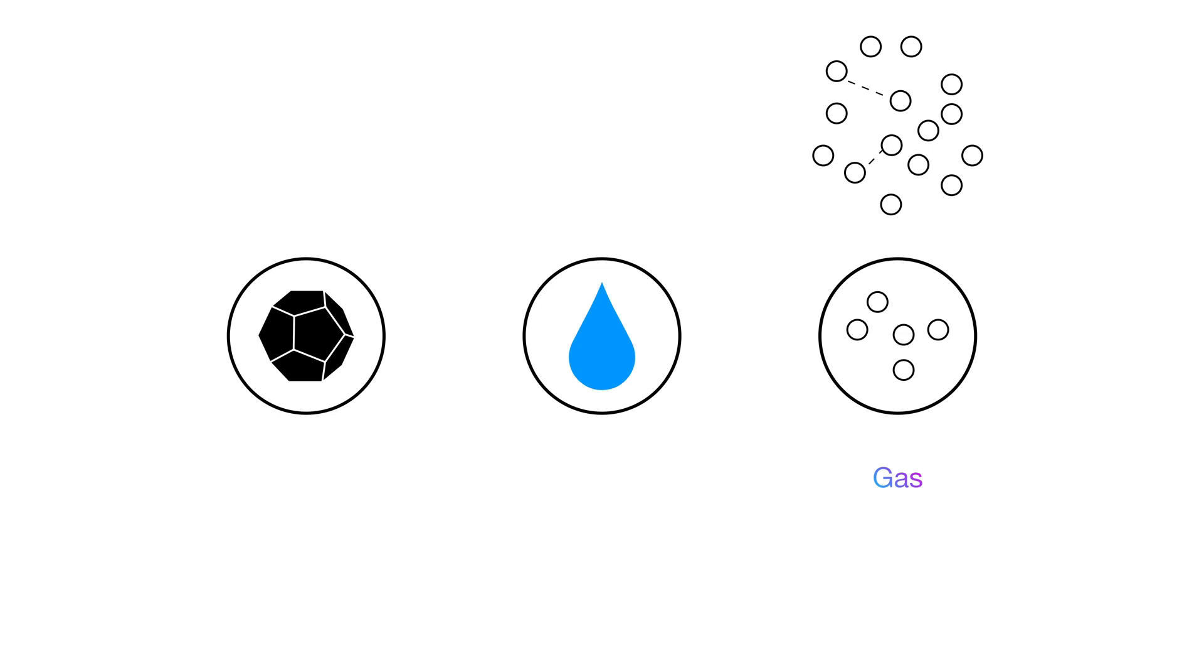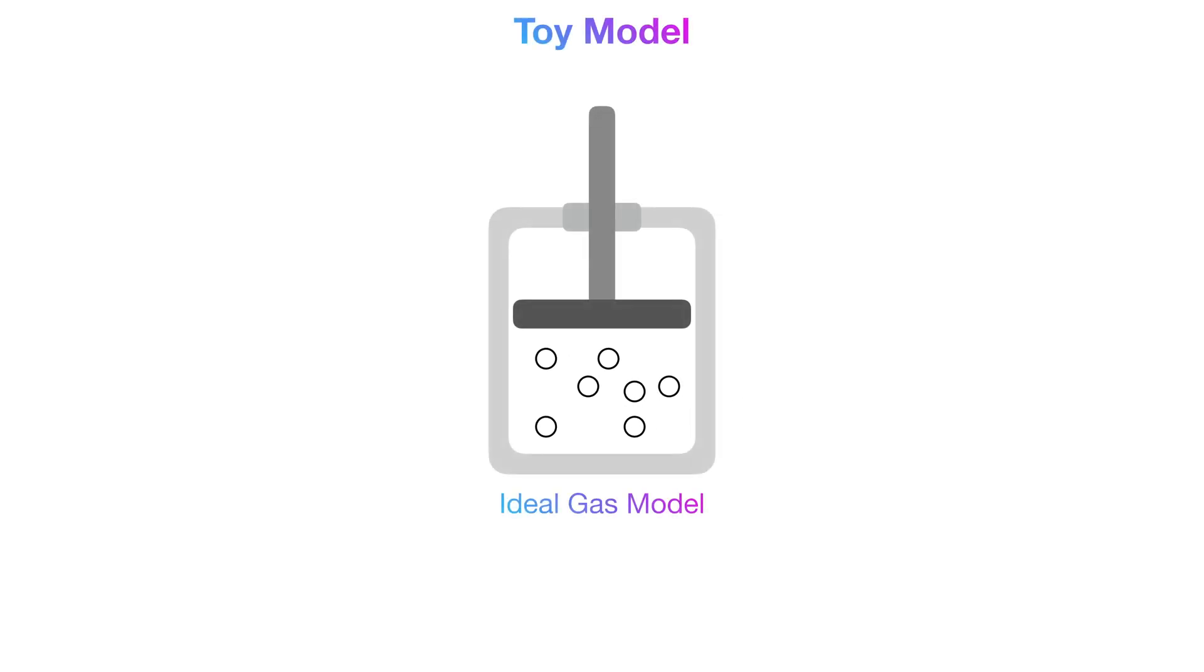And to be even simpler than that, we'll pretend our gas particles don't interact at all and just bump into each other like billiard balls. This is what we call the ideal gas model, and this will be one of the handiest toy models that you'll ever use in your chemistry journey.